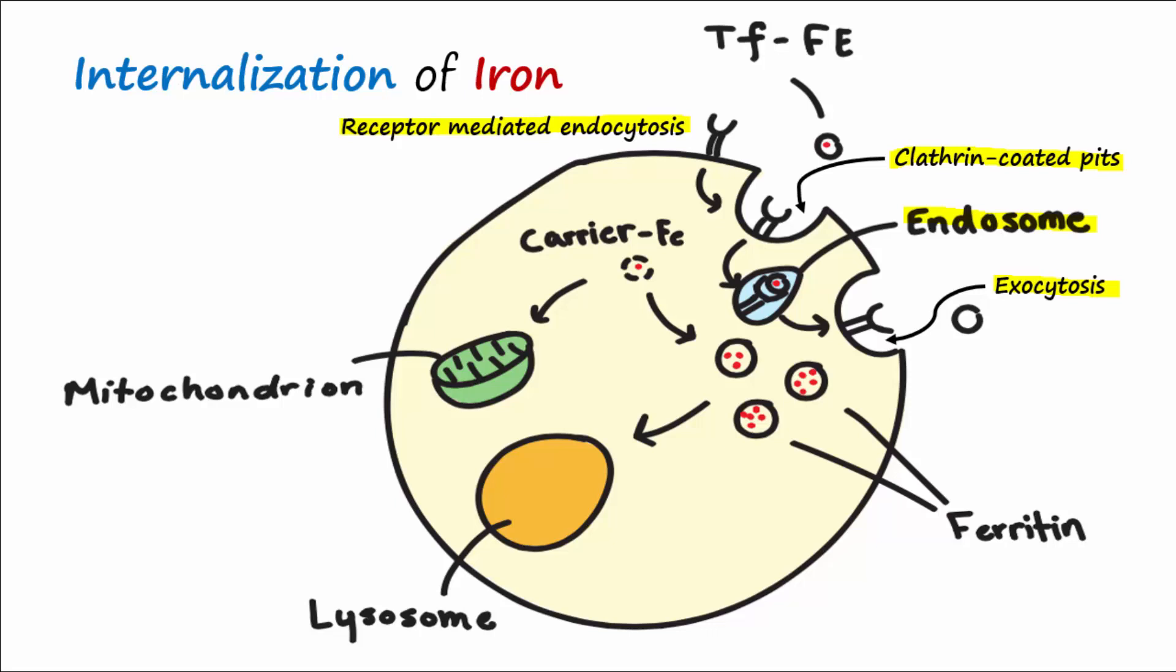In the cytoplasm, ferric iron is shuttled via an intracellular carrier and incorporated into ferritin, which consists of a complex protein of 24 different subunits that come together to form a sphere. Inside this sphere, many atoms of iron are stored.